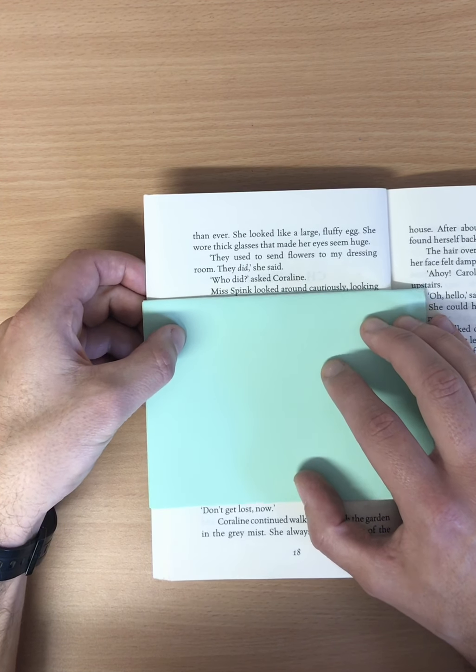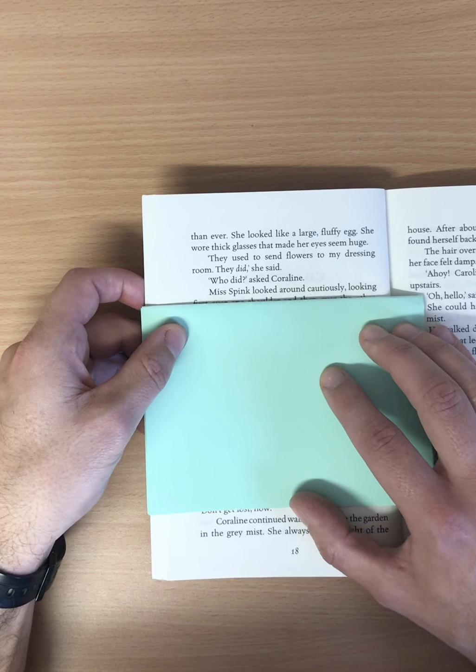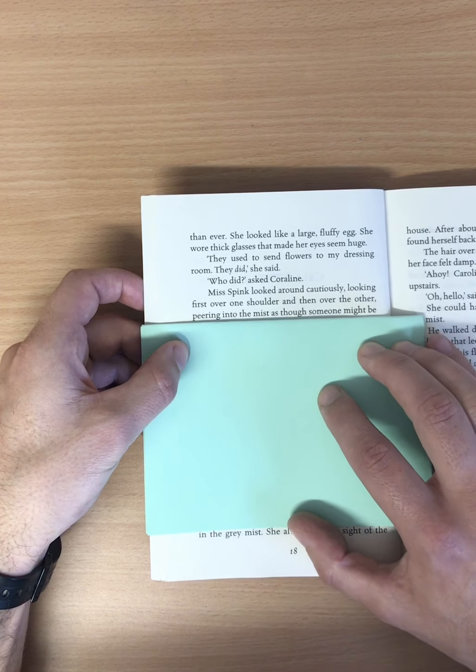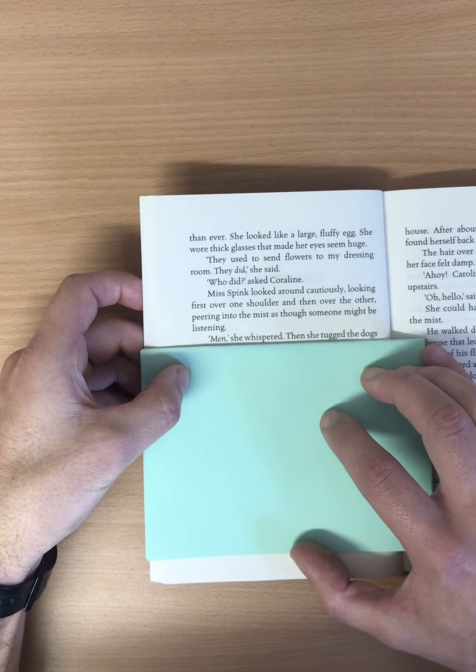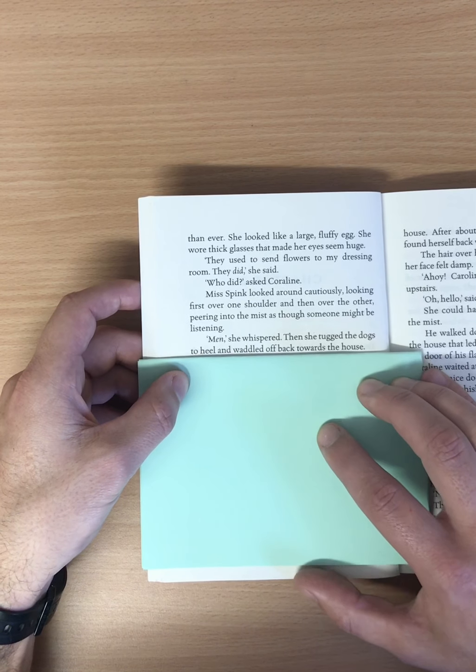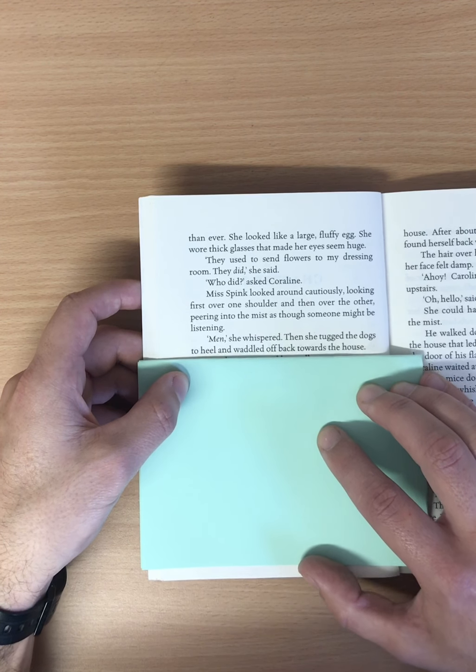Who did? asked Coraline. Miss Spink looked around cautiously, looking first over one shoulder and then over the other, peering into the mist as though someone might be listening. Men, she whispered. Then she tugged the dogs to heel and waddled off back towards the house.